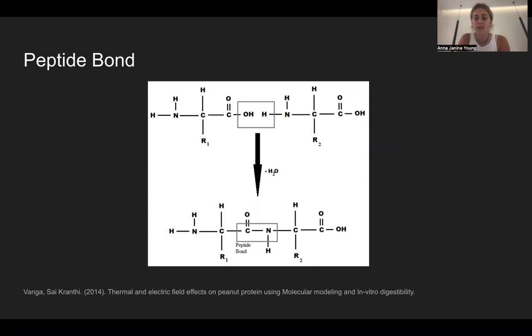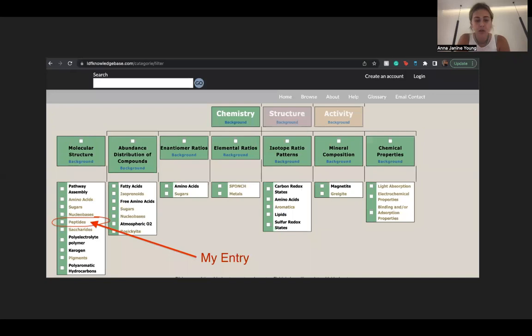My entry into the LDKB is under the peptide category and molecular structure in the chemistry branch. My null hypothesis was that relatively short peptide chains composed of just a few amino acids are indicative of abiotic sources. This simple molecular structure is known as an oligomer.